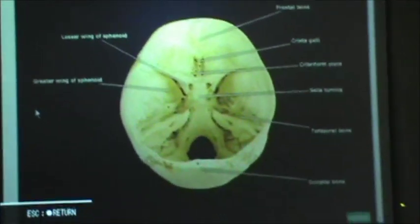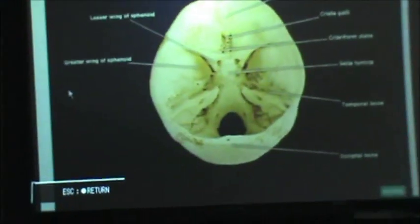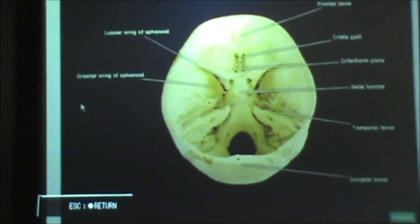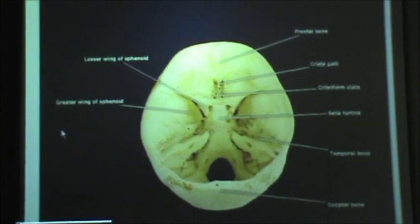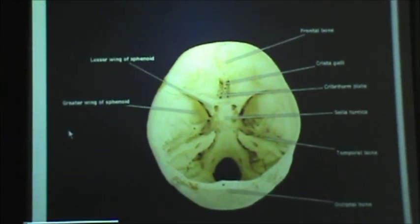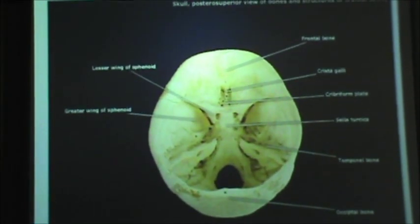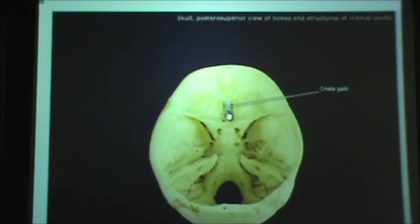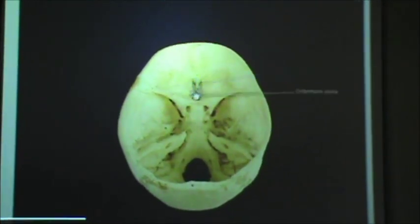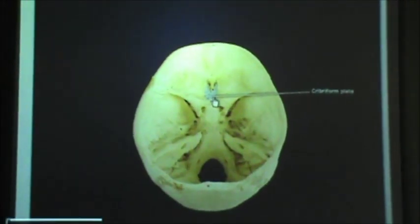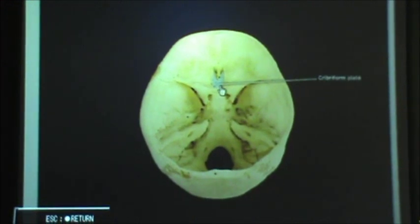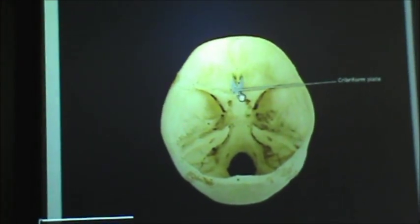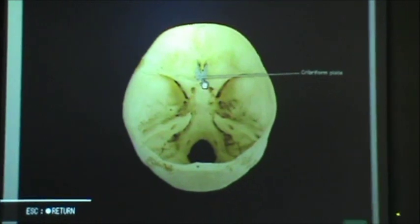This is a posterosuperior view of the bones and structures of the cranial cavity. We're going to identify first the structures of the ethmoid. Here we have the crista galli and the cribriform plate. These were the bones that we saw inside the nose a minute ago.